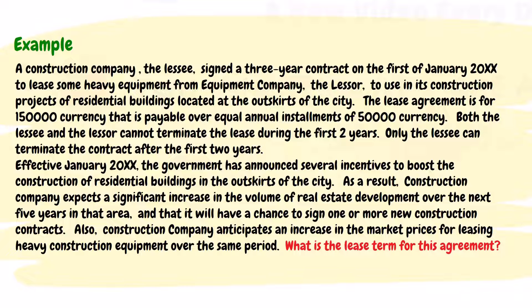Let us illustrate with an example. A construction company, the lessee, signed a three-year contract on the 1st of January 20XX to lease some heavy equipment from equipment company, the lessor, to use in its construction projects of residential buildings located at the outskirts of the city. The lease agreement is for 150,000 currency, payable over equal annual installments of 50,000 currency. Both the lessee and the lessor cannot terminate the lease during the first two years; only the lessee can terminate the contract after the first two years.